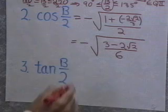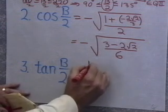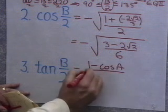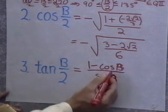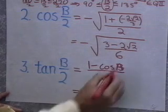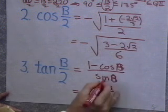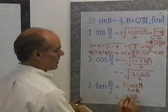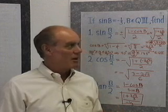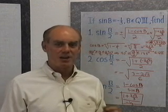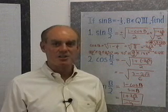Now let's look at tangent of b over 2. There are a couple of different ways to do it. I'll use the formula 1 minus cosine b all divided by sine b. I have 1 minus a negative 2 square root 2 over 3 — so plus 2 square root 2 over 3 — all divided by the sine of b, which is negative one-third. A little algebraic simplification on that will give us the same answer that's in the book. Now I want to look at more problems involving sine, cosine, and tangent of a over 2, and also compare with double-angle and sum formulas.